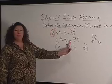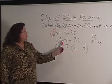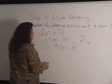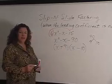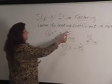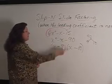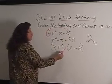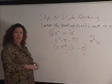The signs are going to be different. The largest one is going to be negative. So we have a negative 10 and a positive 9. Then we take our slip that we slid the 6 over. We're going to slide it back under. So each of these will have the 6 in the denominator again.